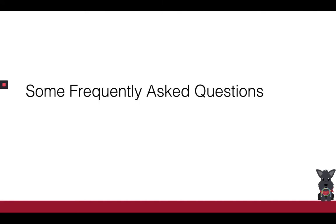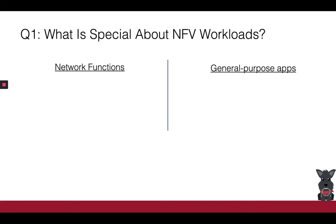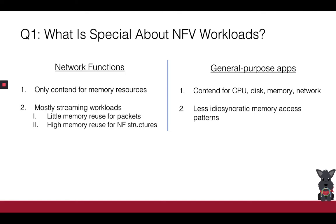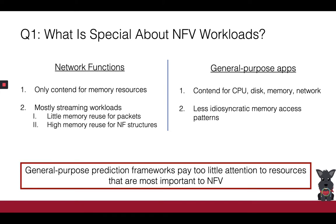Before concluding, I'd like to address three frequently asked questions about SlowMo. The first question is: what is special about NFV workloads, or why can't I use any generic predictor instead of SlowMo? First, due to NFV deployment assumptions, NFs mostly contend for resources in the memory subsystem, whereas general-purpose applications might contend for many other resources. Additionally, NFs are streaming workloads with idiosyncratic memory access patterns, with little memory reuse for packets and high memory reuse for NF-specific data structures such as rule tables. Therefore, general-purpose prediction frameworks pay too little attention to the resources that are most important to NFV.